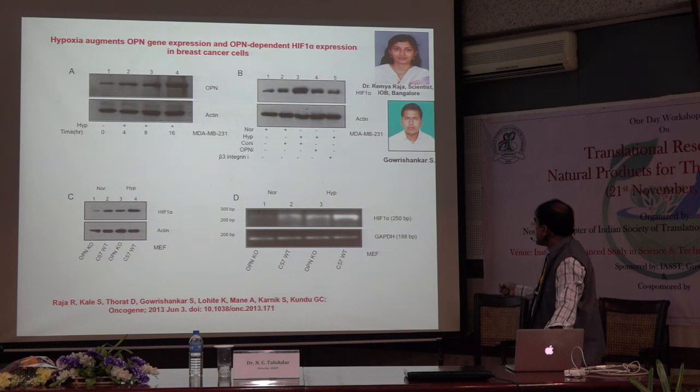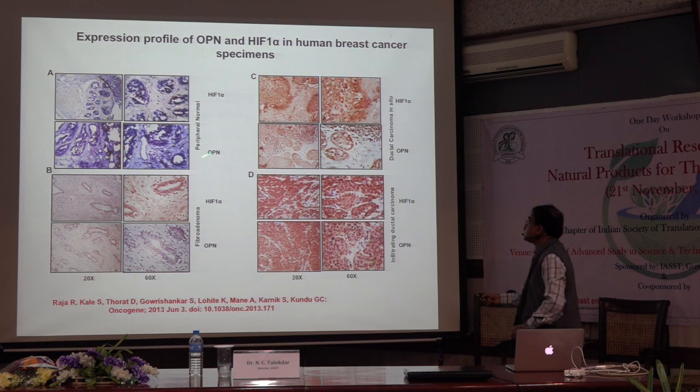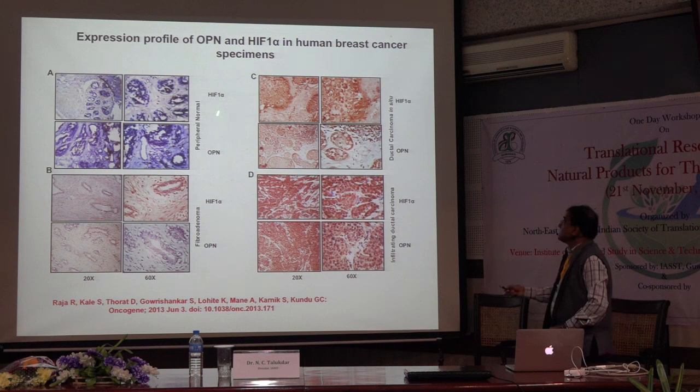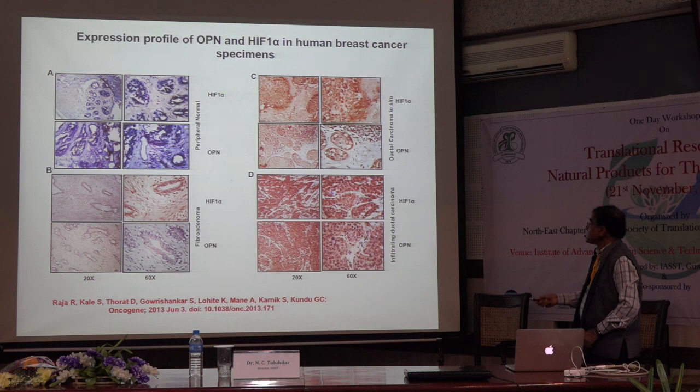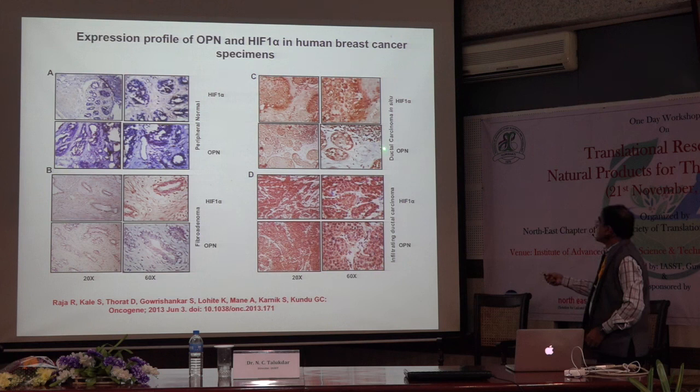Then this part of the study — what she has done in collaboration with a hospital in Pune, Ruby Hall Grant Medical Foundation — she studied 53 patients with four different categories: infiltrating ductal carcinoma, ductal carcinoma in situ, fibroadenoma, and peripheral normal tissues. She correlated the expression of osteopontin and HIF-1 alpha and found there is more expression of these two genes in infiltrating ductal carcinoma or ductal carcinoma in situ compared to early stage breast cancer like fibroadenoma. She analyzed the data and found that 75 percent of patients have a good correlation of these two gene expressions, and that controls the progression of this disease.